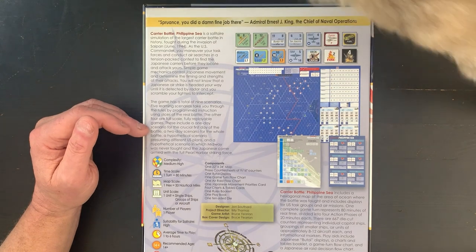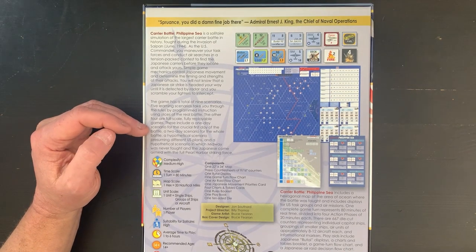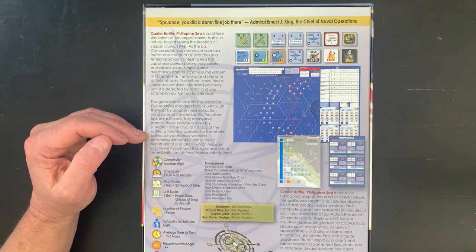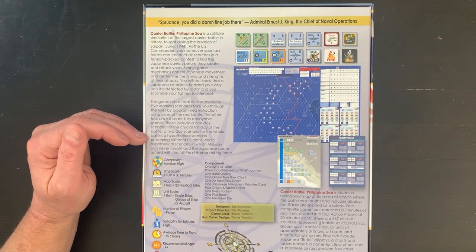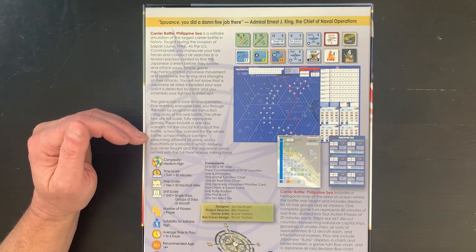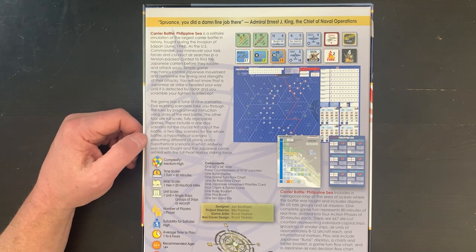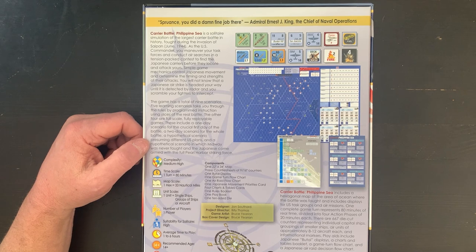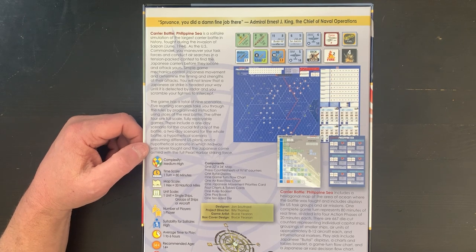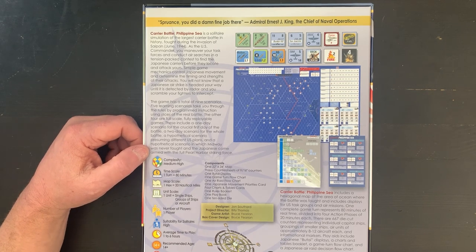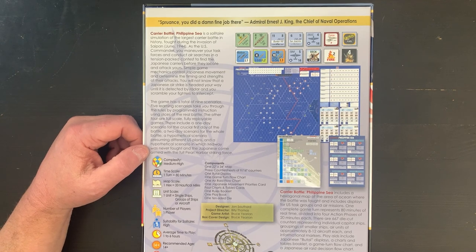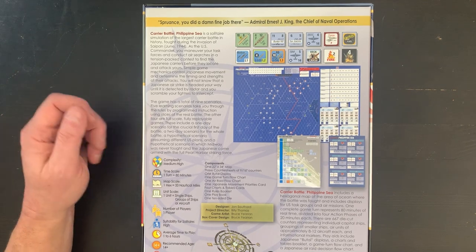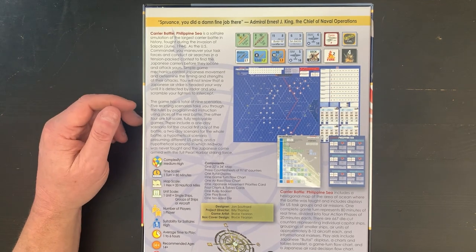It says the other four are full scale, fully replayable games. These include a one-day scenario for the critical first day of the battle, a two-day scenario for the whole battle, a hypothetical scenario presuming different U.S. plans, and a hypothetical scenario in which Midway was never fought and the Japanese came with the full Pearl Harbor striking force. These are going to be interesting.